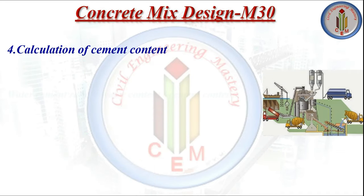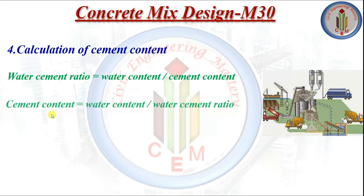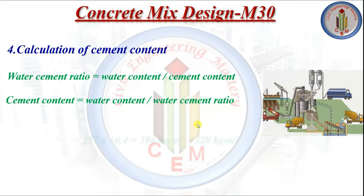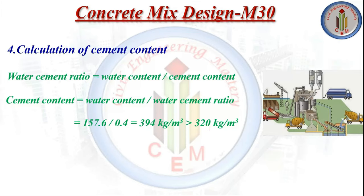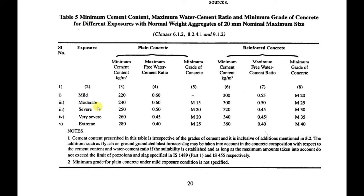Next, calculation of cement content. The formula is: water-cement ratio = water content ÷ cement content. So cement content = water content ÷ water-cement ratio = 157.6 ÷ 0.4 = 394 kg per cubic meter. This is greater than the minimum cement content of 320 kg/m³ from IS 456:2000 Table 5 for severe exposure condition, so we adopt 394 kg per cubic meter as the cement content.